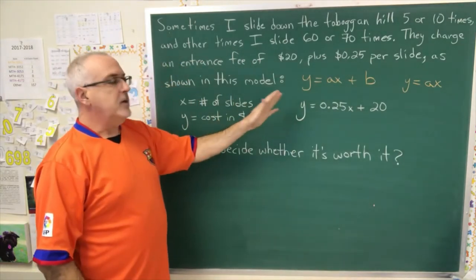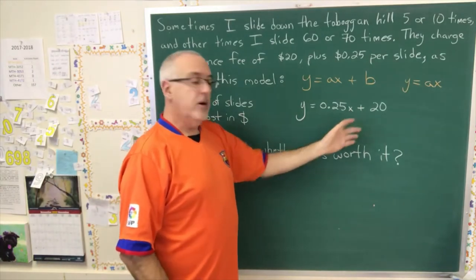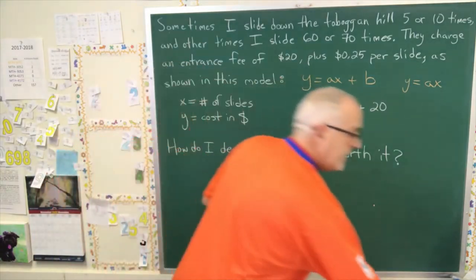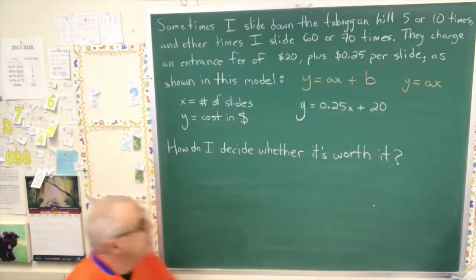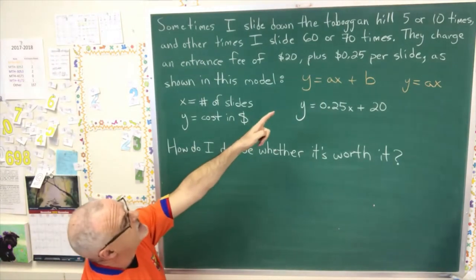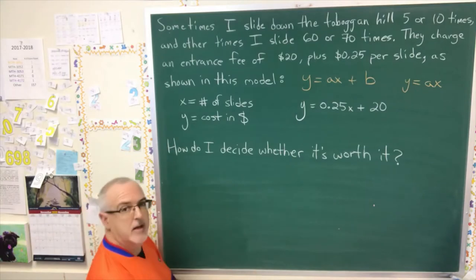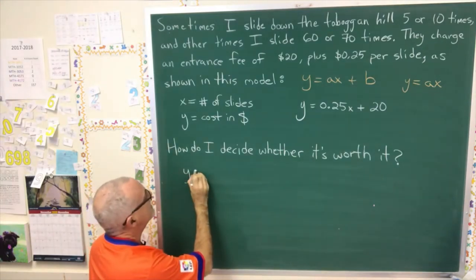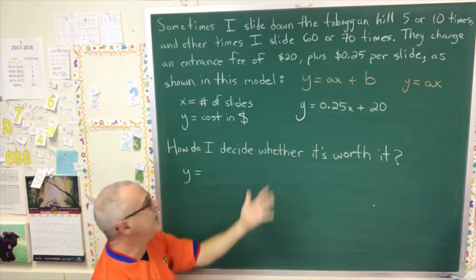What we're being asked to do is plug values into this model in order to answer a question about how to decide whether it's worth it. So, let's do some plugging. Let's use the numbers that were suggested in the problem: 5 times, 10 times, 60 times, or 70 times. The way we do this is our y equals ax plus b model has the x replaced with the number of slides.